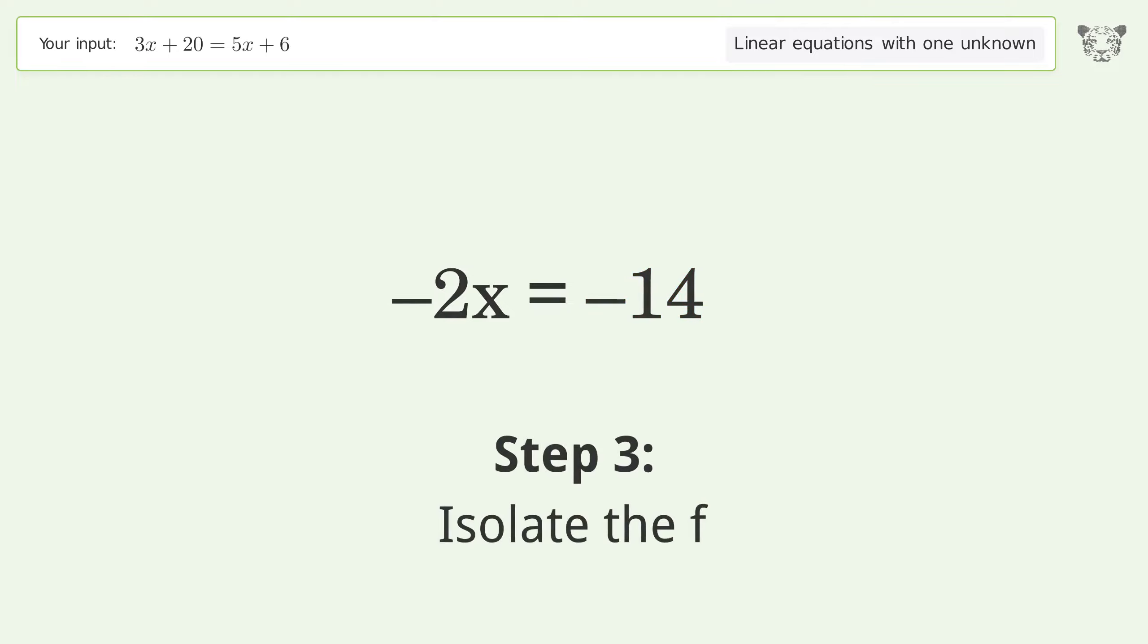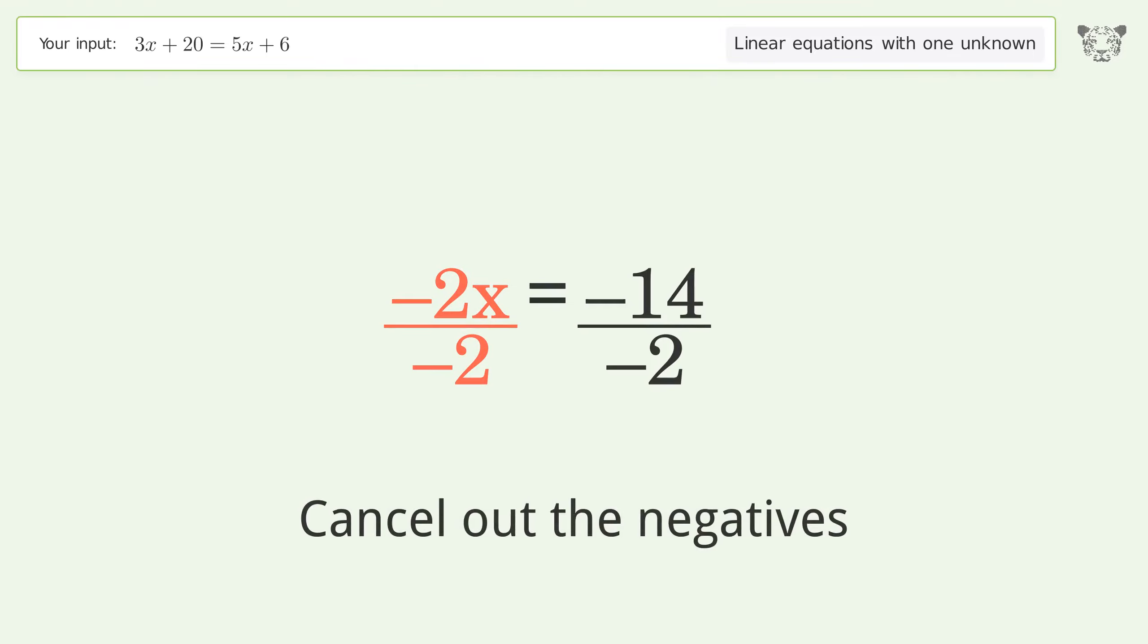Isolate the x. Divide both sides by negative 2. Cancel out the negatives. Simplify the fraction.